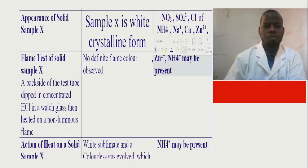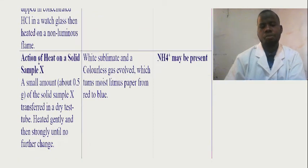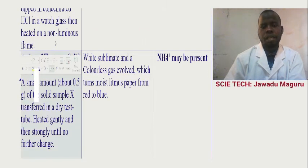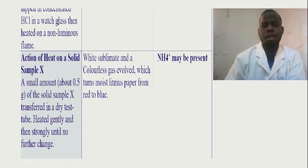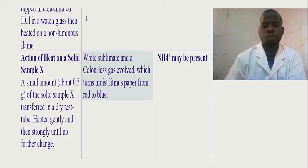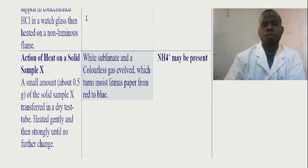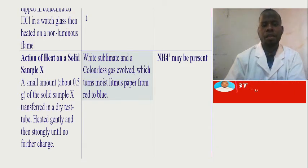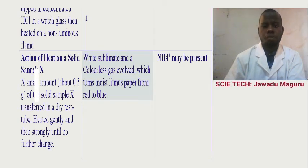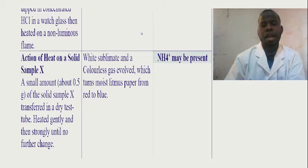Another action is the action of heat. We are going to transfer a small amount of solid sample X and heat it in a test tube. The observation: you are supposed to observe white sublimate and colorless gas evolved, which turns moist litmus paper from red to blue. The sheet is prepared in passive voice, so you are supposed to write what you have observed — evolved — because it is you who performed the experiment. The inference: ammonium ion may be present.